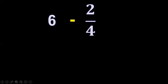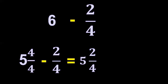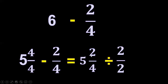Another one: six minus two-fourths. Borrow one from six — it becomes five. Divide one into four equal parts, giving five and four-fourths. Copy minus two-fourths. Subtract: five minus zero equals five. Four minus two equals two, and copy the denominator four. Two and four have a common factor of two. Divide: two divided by two equals one, and four divided by two equals two. So the final answer is five and one-half.